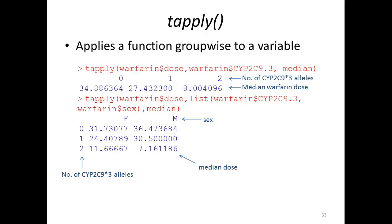You are not restricted to a single grouping variable either, but you could use several of them. In this case, we extend the grouping variable to two variables, and then we have to provide them as a list containing first the warfarin CYP2C9 dot 3 column, comma, the warfarin dollar sex column.